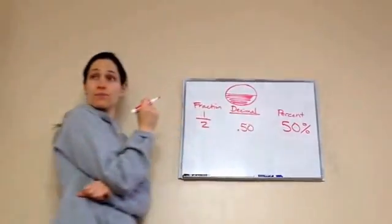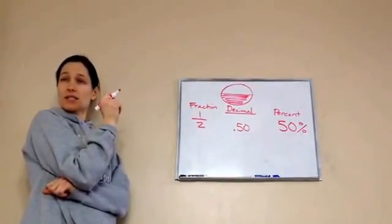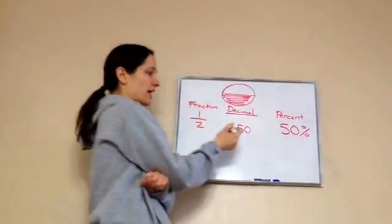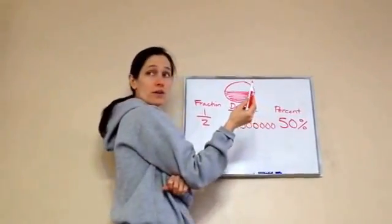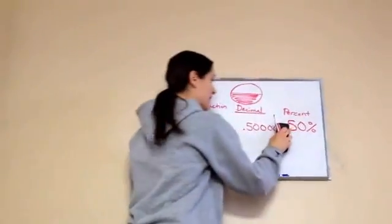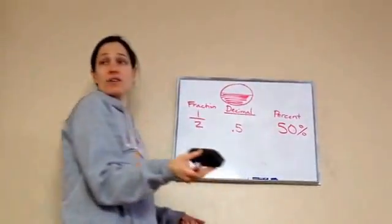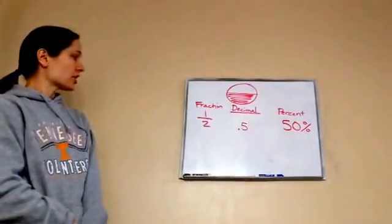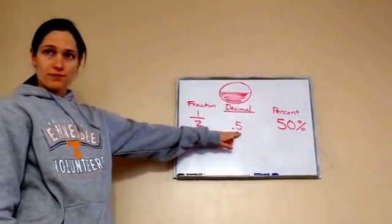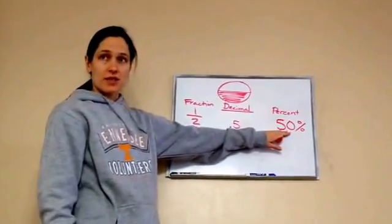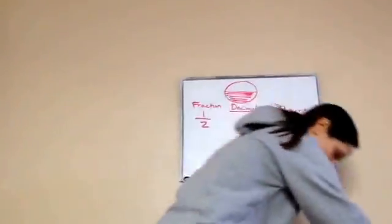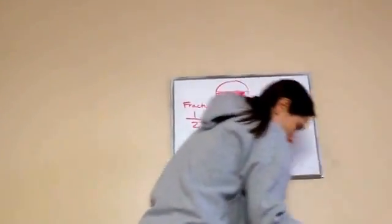Remember, I could add as many zeros as I want, or I could just make it 0.5 and it wouldn't matter, because trailing zeros don't change the value. So did you understand how we got the decimal, how we got the percent, and how we got the fraction? Very good. Let's try another one.